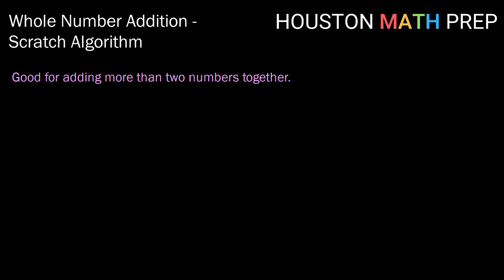This algorithm is actually one of the easiest ones for adding more than two numbers together at the same time. It's a lower stakes version of the standard algorithm, and what I mean by lower stakes is that you don't have to have as much going on mentally. You can do more of it on paper.